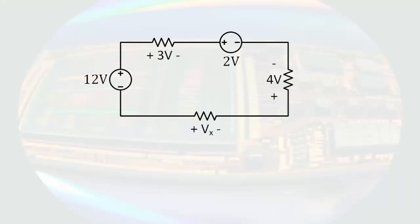Let's apply this to an actual circuit. Given this circuit, if we go around the loop clockwise and apply KVL, here we go from a negative to a positive. That is an increase of 12 volts. Here we go from a positive to a negative. That is a decrease of 3 volts.